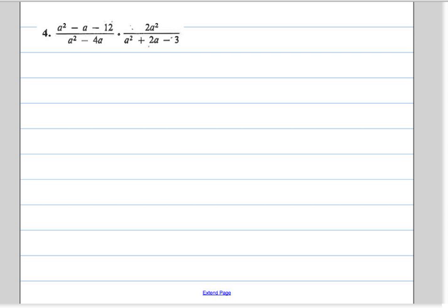We're going to multiply these two rational expressions, so what we're going to do first is factor each and see if we can simplify. Factoring the first numerator, we're looking for two numbers that multiply to negative 12 and add to negative 1.